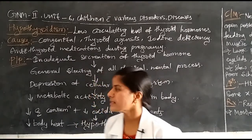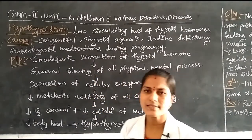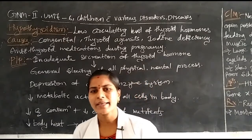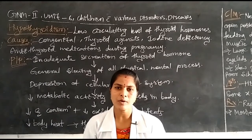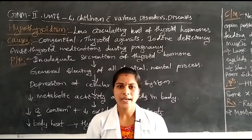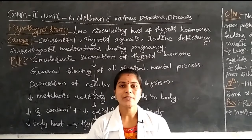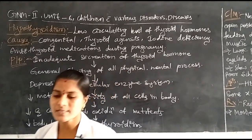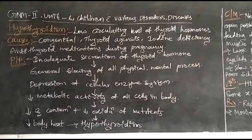Another cause is thyroid agency — where the thyroid gland is structurally present but has functional abnormalities. The gland exists in the children, but some functional abnormalities are there, which is why the children develop hypothyroidism.